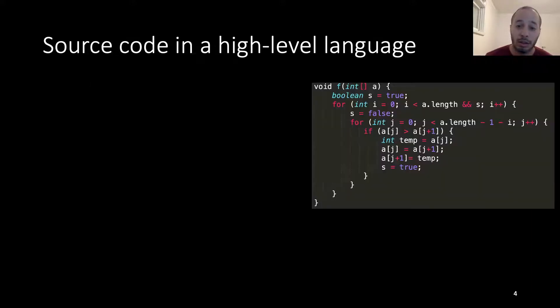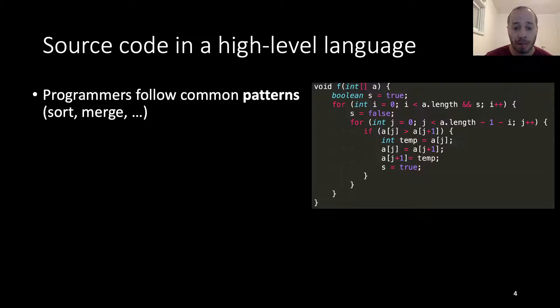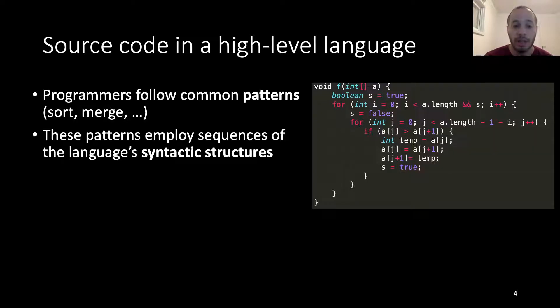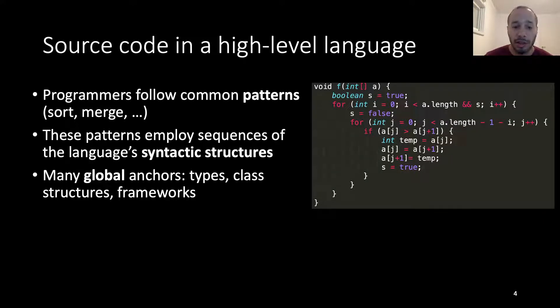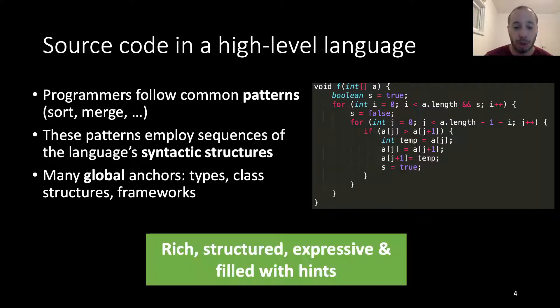Well, when writing source code programmers follow common patterns. These patterns employ sequences of syntactic structures defined by the language. The language also defines many global symbols which can be used as anchors. These include types, class structures and frameworks. In short, source code is rich, structured, expressive and filled with hints which facilitates learning.